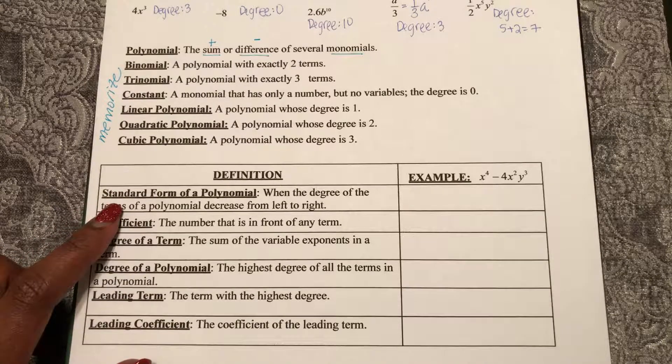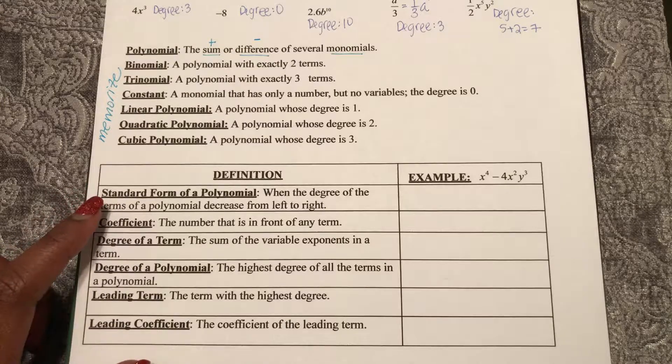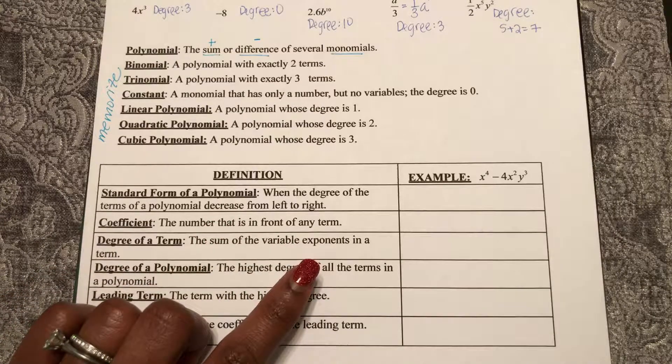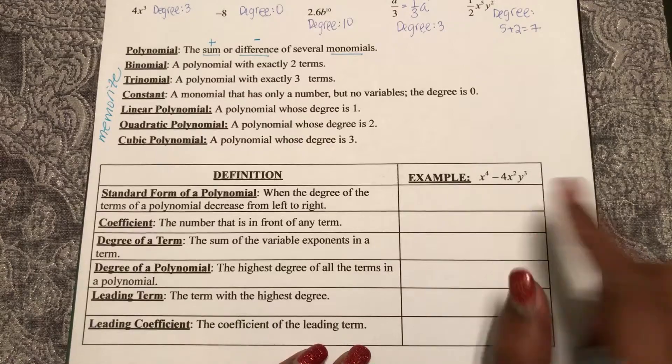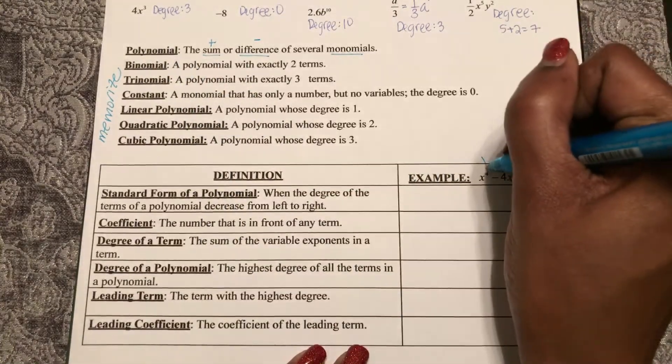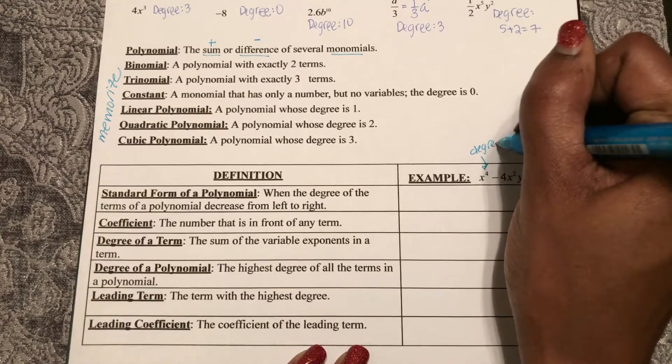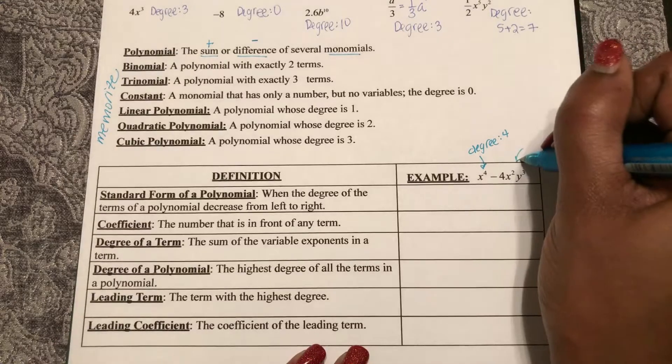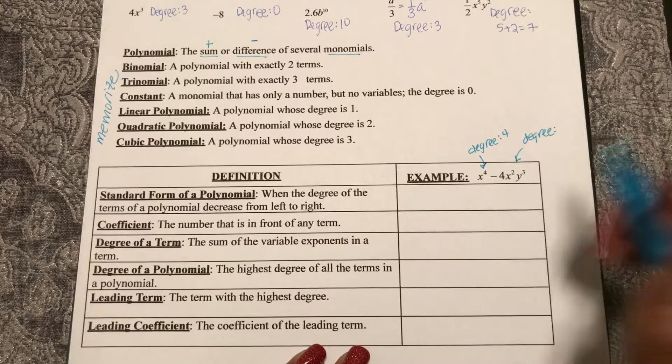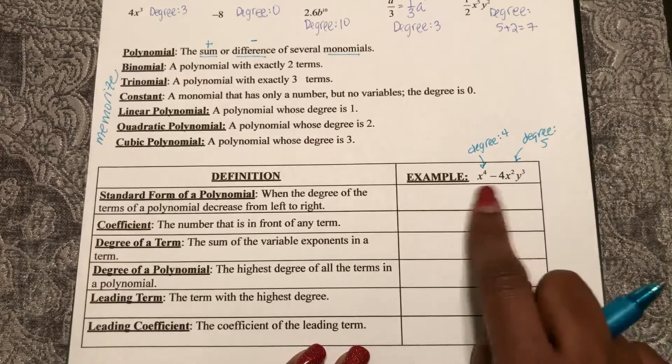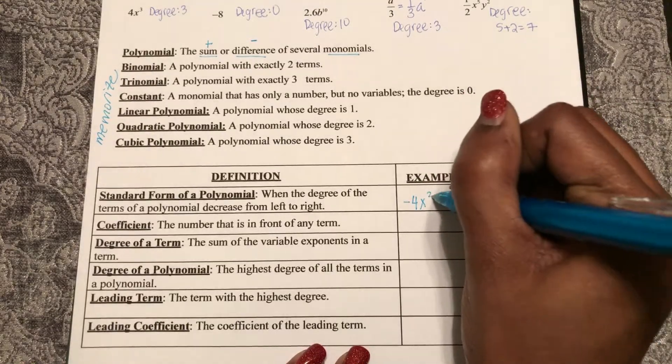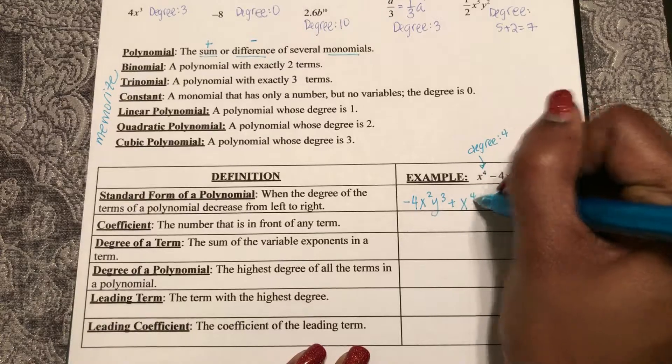Standard form is when we write the polynomials where their degrees decrease from left to right. So if I look at this polynomial, it's actually two terms, so it's a binomial. I know the degree of this term is four, and I know the degree of this term is two plus three, which is five. So if I rewrote this in standard form, it would be negative four x squared y cubed plus x to the fourth, going from my highest degree decreasing.